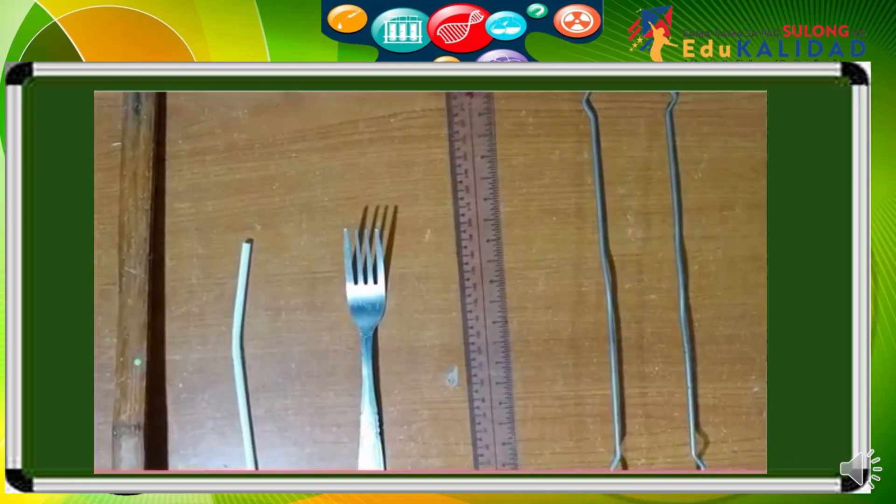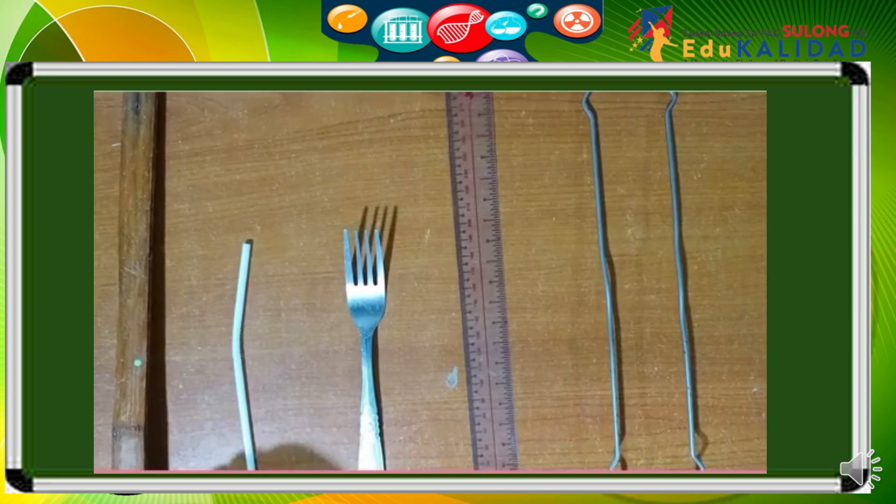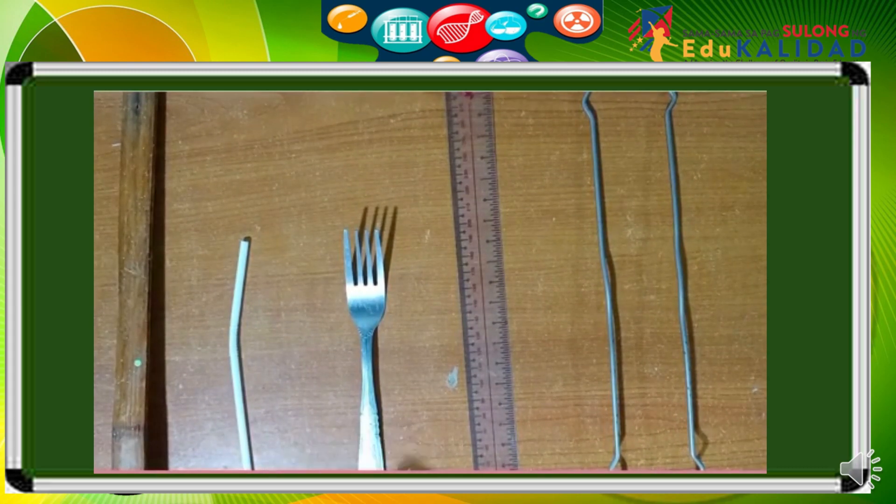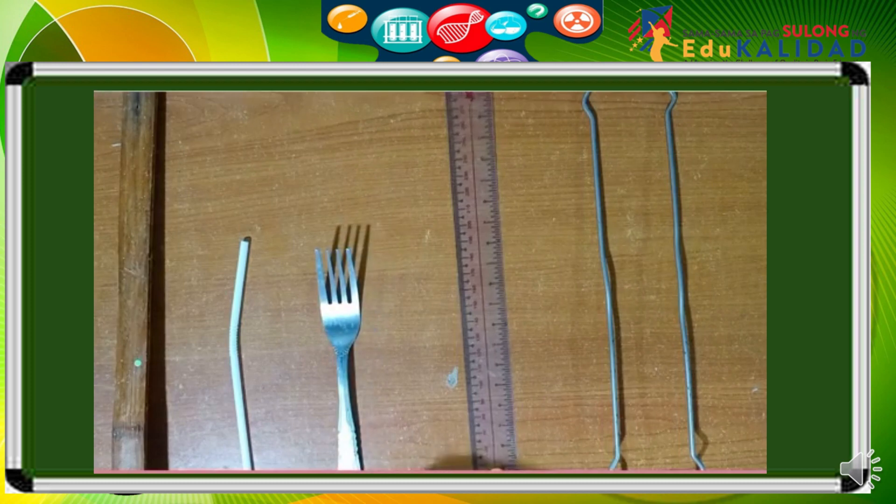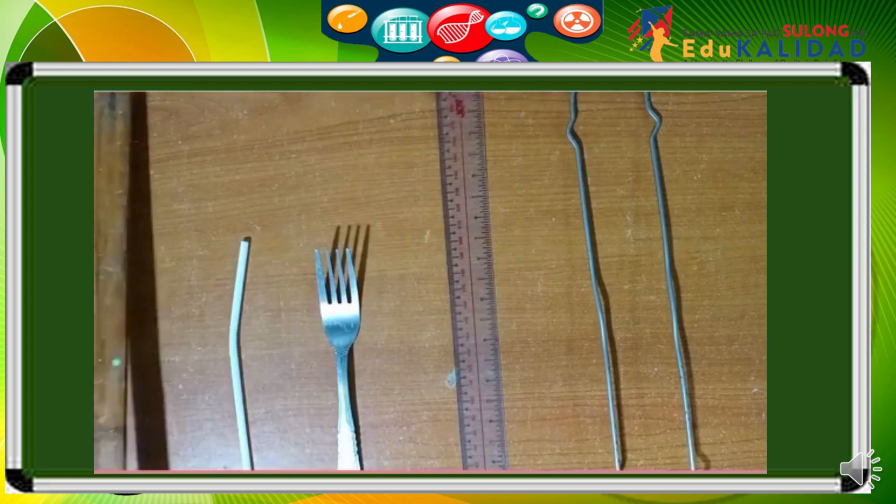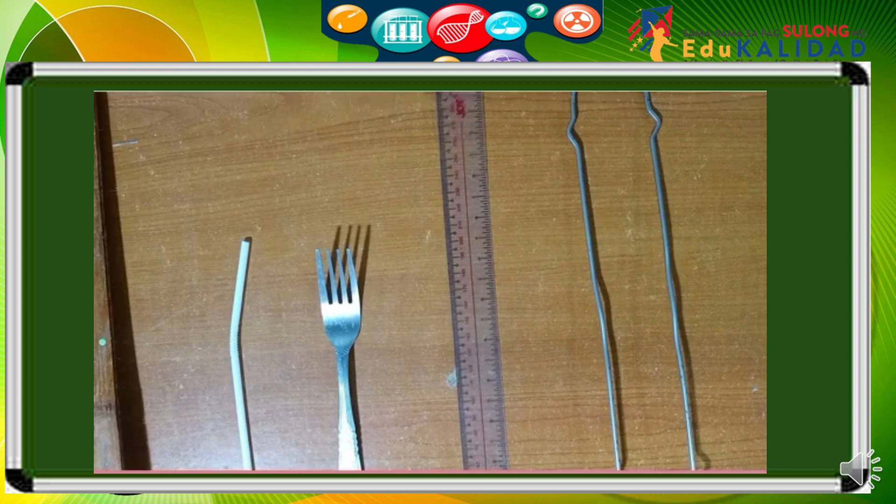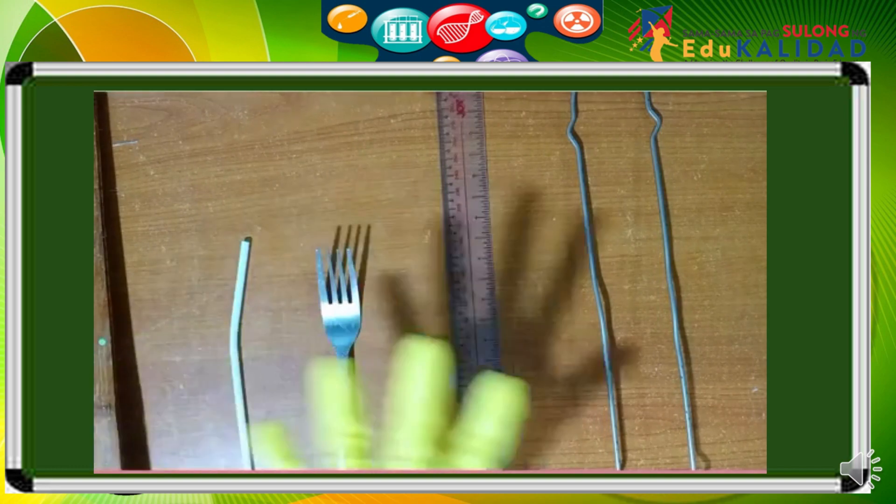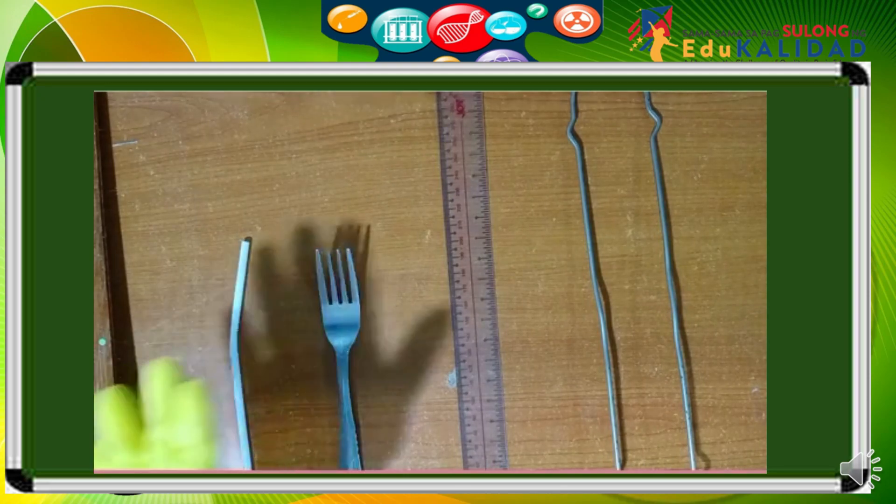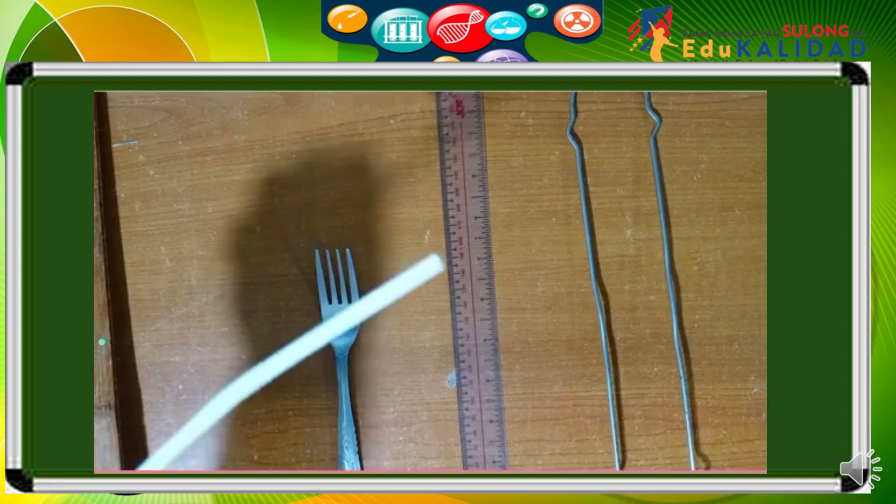These are the materials needed for activity one Bend Me on page four of your module: plastic straw, metal fork, plastic ruler, wire, and bamboo stick. Let's bend it one by one. When we say bending it means to force an object from a straight form into a curve or angular one. These materials can be bent. Let's try this plastic straw. When we applied force in this plastic straw...